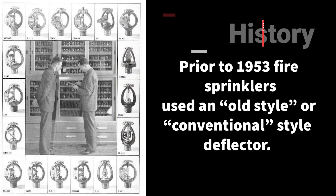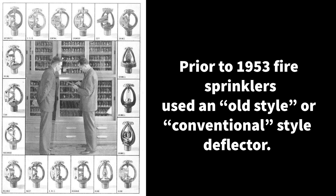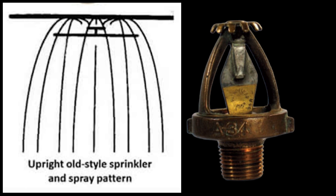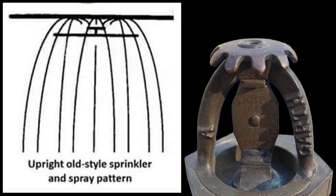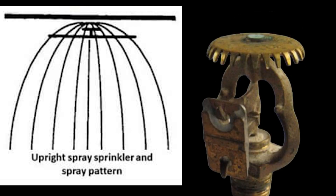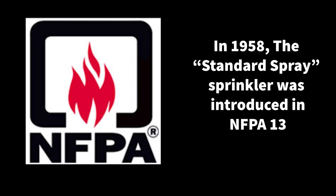Prior to 1953, sprinkler heads used an old style or conventional style deflector. Its spray pattern would throw up to 60 percent of its discharged water upwards, creating a very vertical spray pattern. In the early 1950s there was an improved deflector that created the umbrella shaped spray pattern we know today, achieving a larger square footage of coverage. In 1958, NFPA 13 introduced the standard spray sprinkler, which became the most commonly used fire sprinkler head.